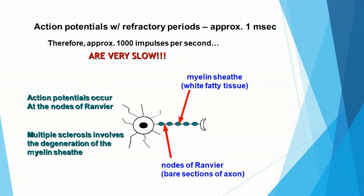Nodes of Ranvier — it's one of my favorite vocabulary terms in the course, it just sort of rolls off the tongue. What the myelin sheath does is speed up the travel of the action potential along the axon.